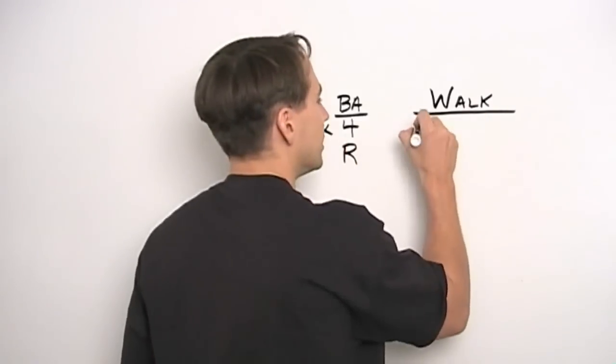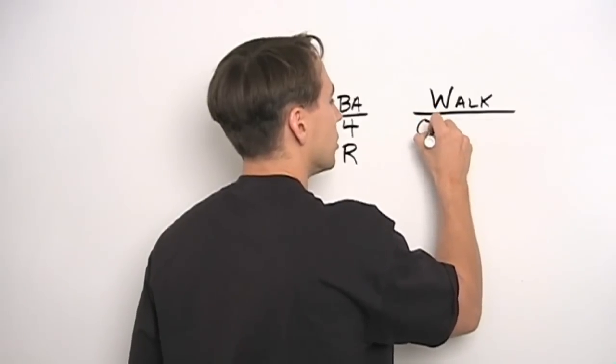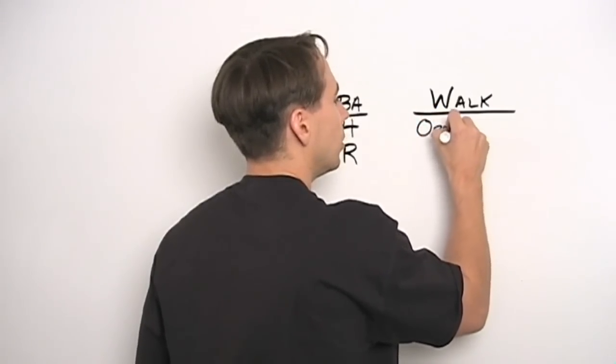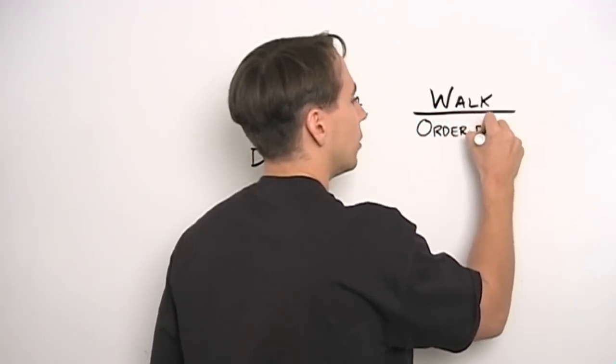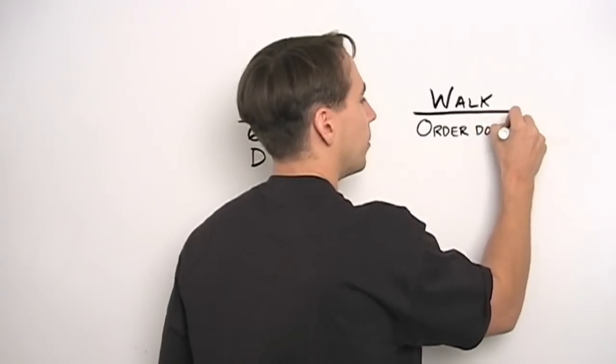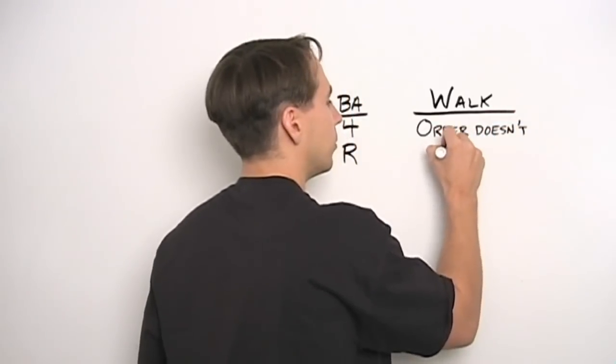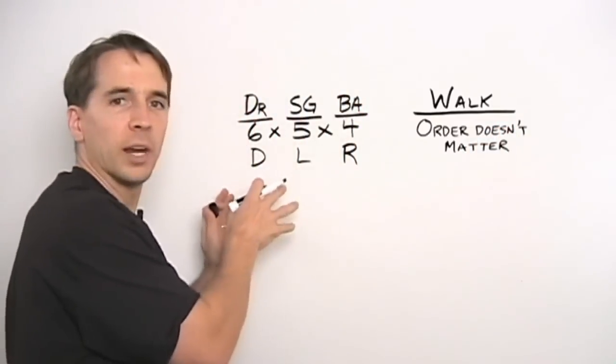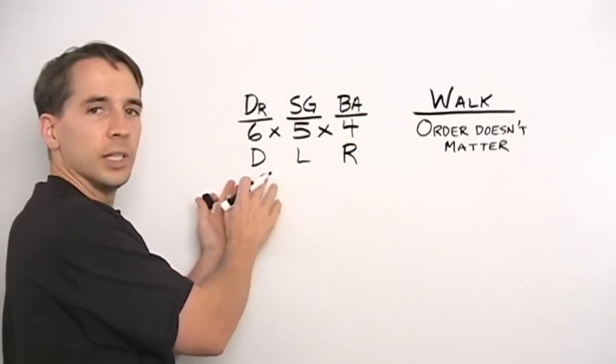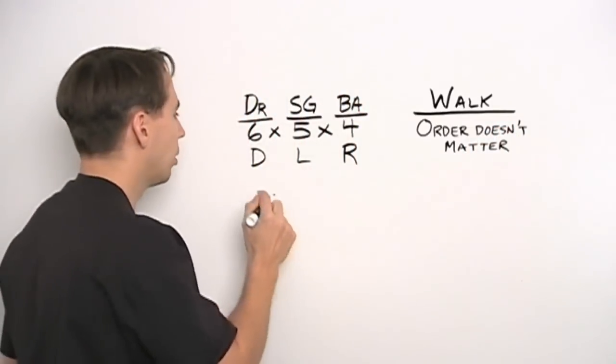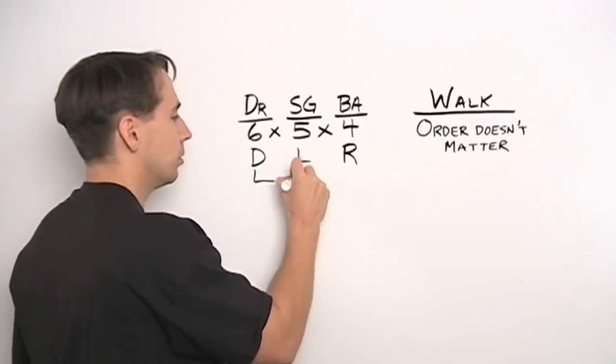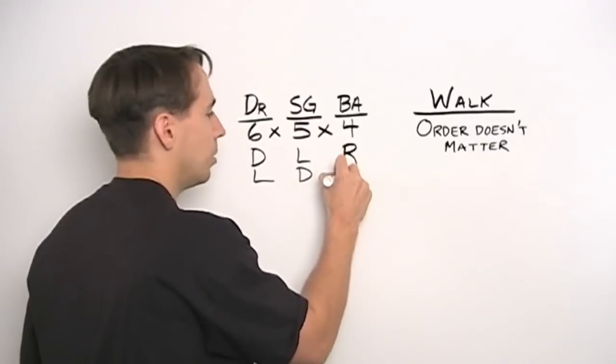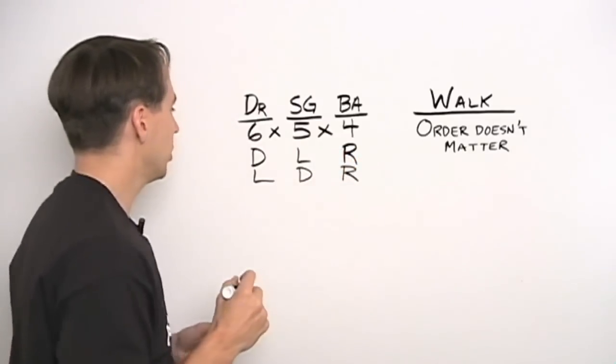So the big difference here, and I'm going to write it down, that's how important it is, is the order doesn't matter. And to give you an example of how it matters over here, this isn't the only way Dave, Larry, and I can get in the car. Well, Larry could be driving, Dave in the shotgun seat, and I'm still in the back seat, eating the pizza you bought us.